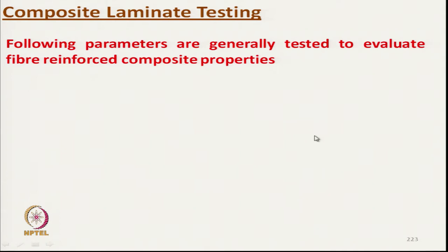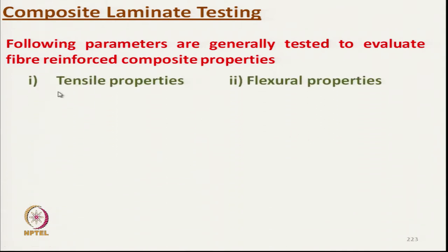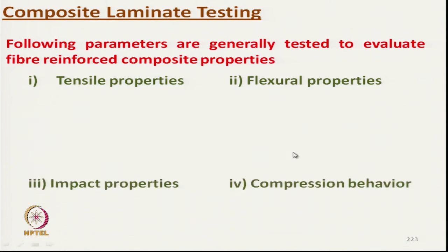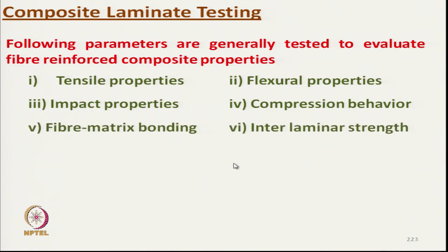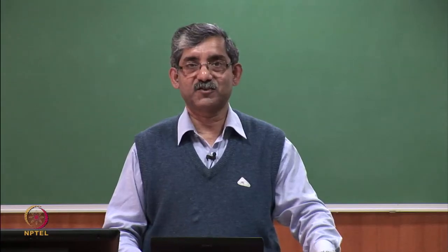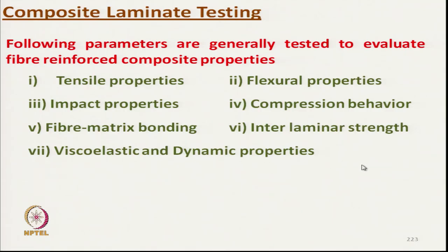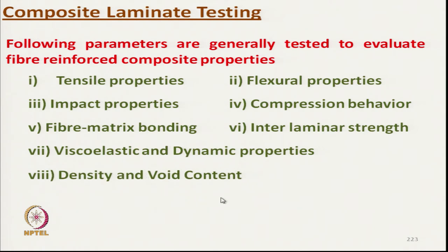Composite laminate tests include tensile characteristics, bending characteristics, impact properties, and compressional material behavior — specifically axial compression. Fiber-matrix bonding is very important, as is interlaminar strength characteristics, viscoelastic and dynamic properties, density, and void content. Void content is very important — ideally there should not be any void present in the composite, as any void deteriorates the quality drastically.